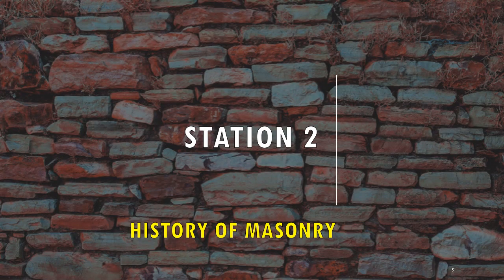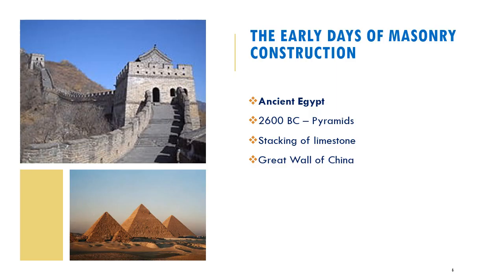Station 2: a brief history of masonry. If we look at the historical context, masonry structures go back to 2600 BC with the pyramids. The pyramids are constructed of individual masonry units stacked one on top of the other. You also have another example, which is the Great Wall of China, again composed of masonry structures connected to one another.